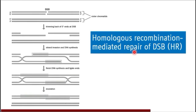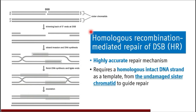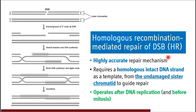Coming to homologous recombination mediated repair of double strand breaks, also abbreviated as HR. HR is a highly accurate, high-fidelity repair mechanism for double strand breaks. It requires a homologous intact DNA strand as a template. Unlike non-homologous recombination, we are not risking adding unnecessary sequences or deleting original sequences — instead, we take help of the undamaged sister chromatid to guide the repair process.